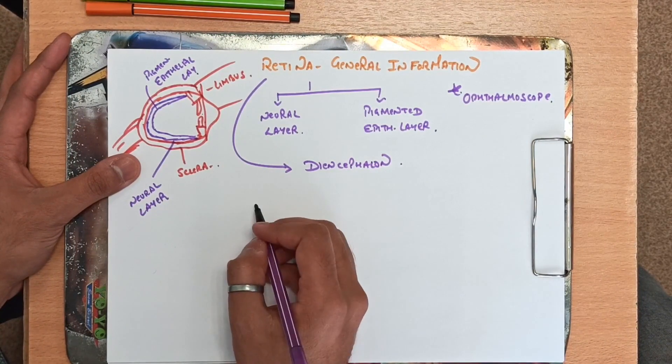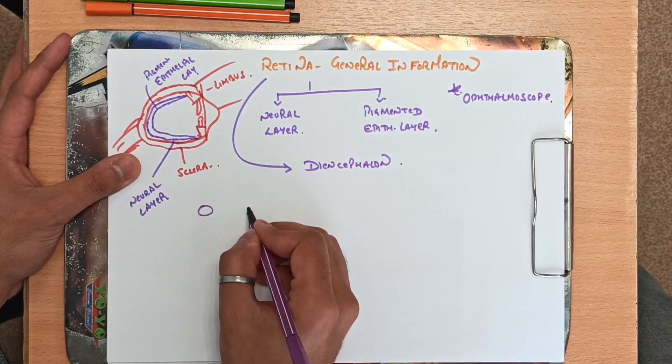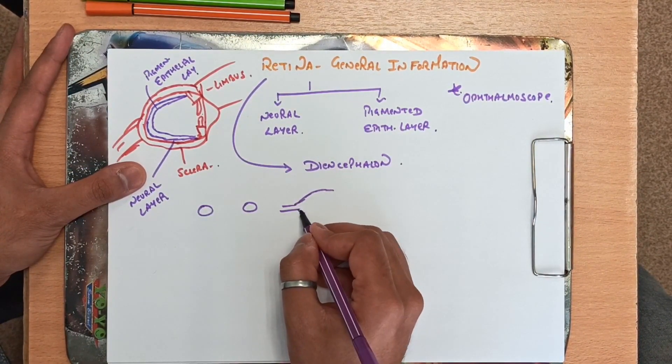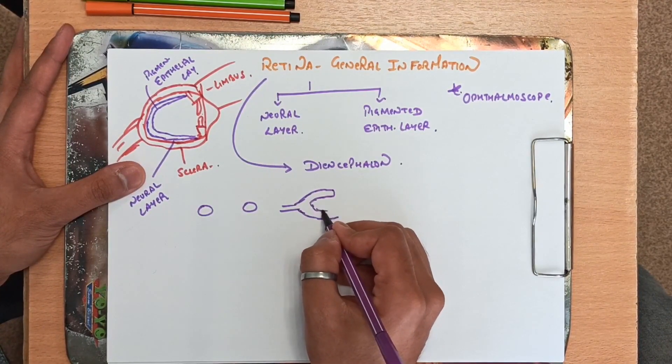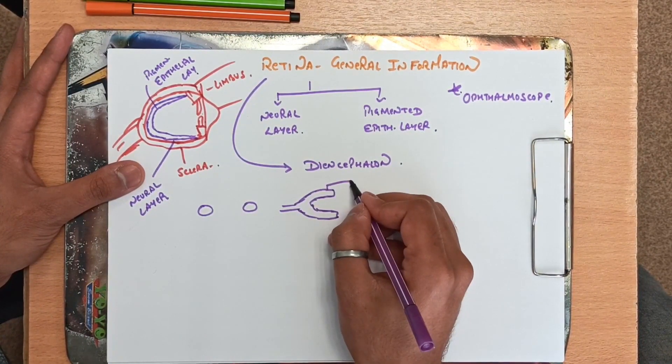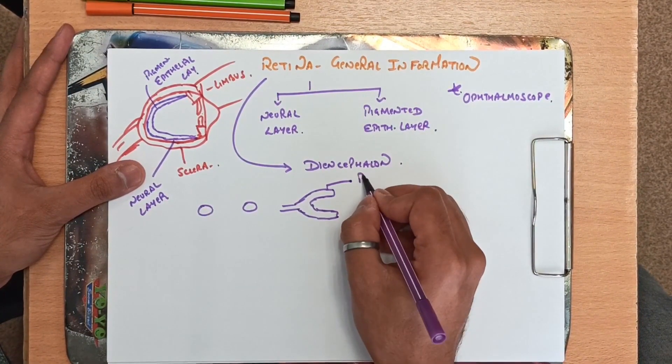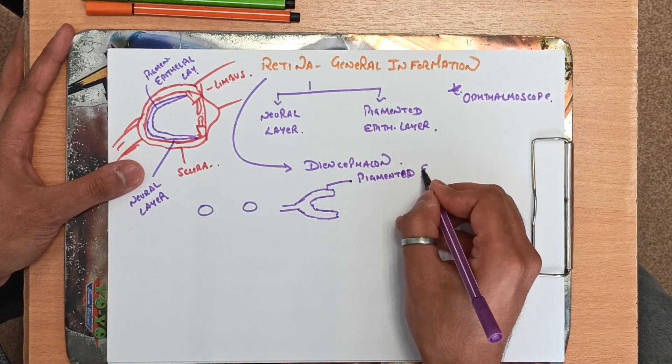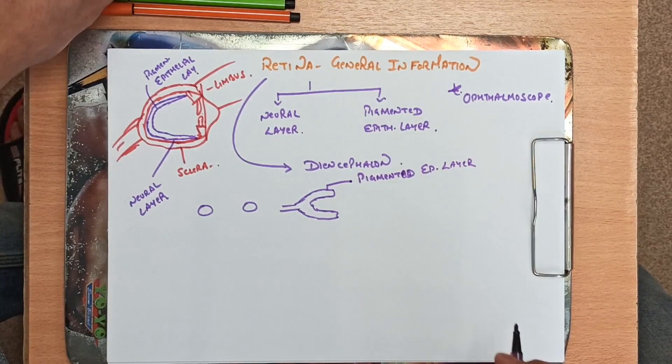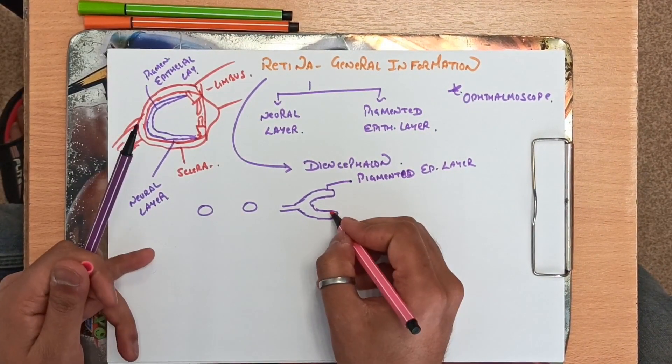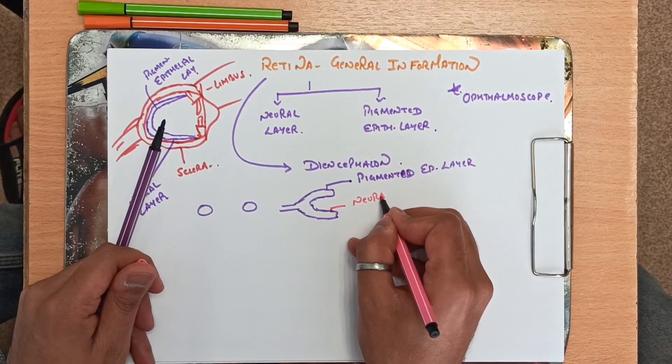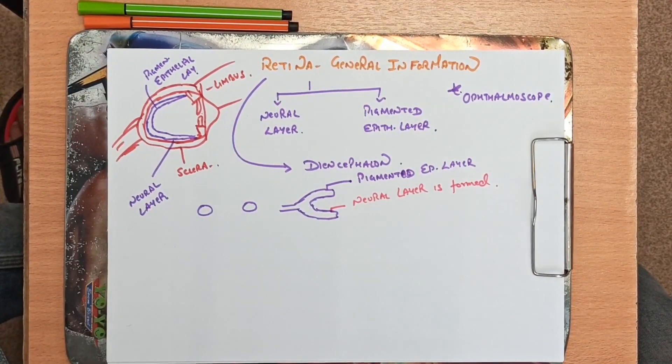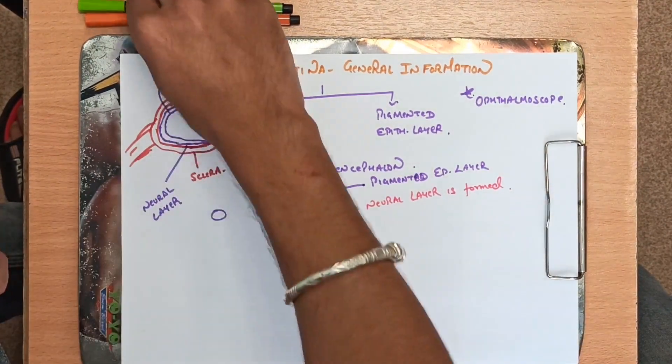During the development, retina develops from diencephalon. It develops in such a way the diencephalon results in the formation of optic vesicles. Later on during the development these develop into the optic cup. From the outer part of the optic cup, pigmented epithelial layer will be formed, and from the inner part of optic cup the neural layer is formed.